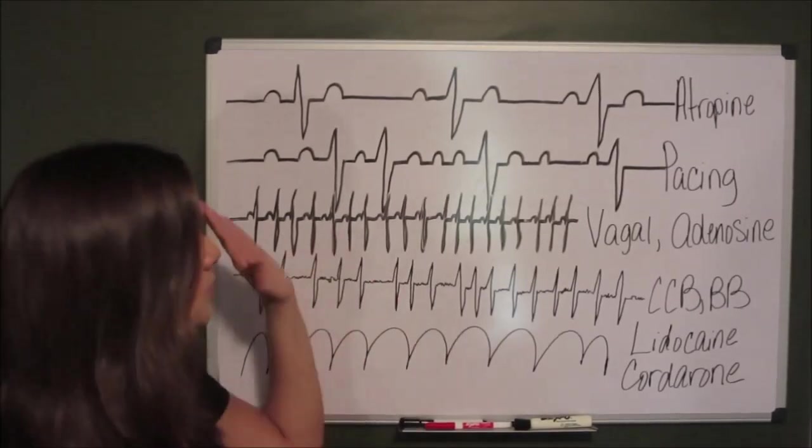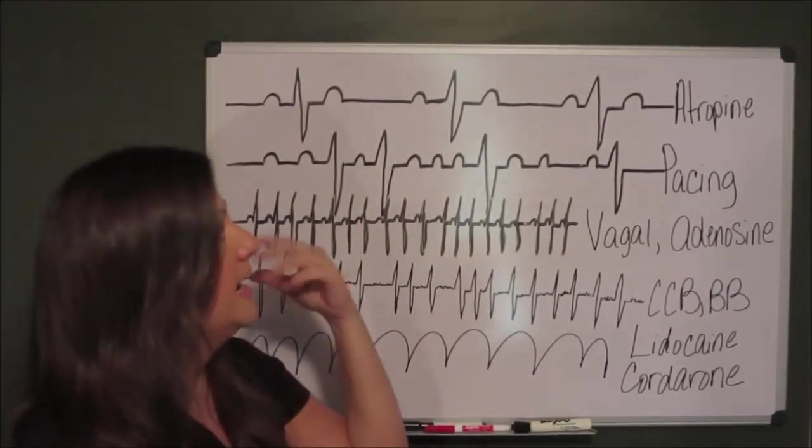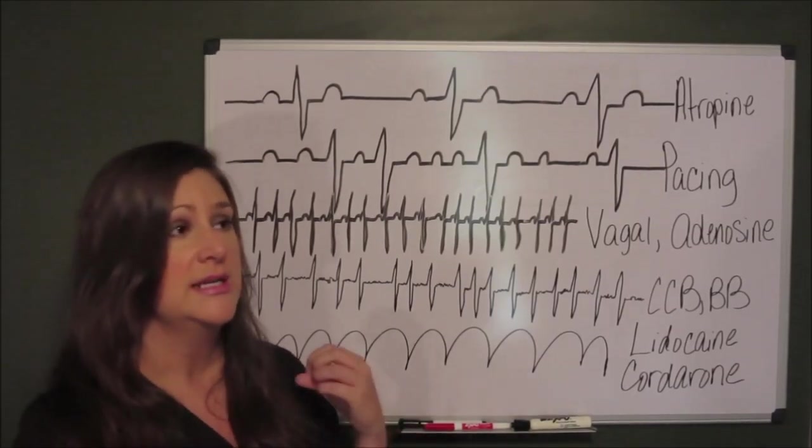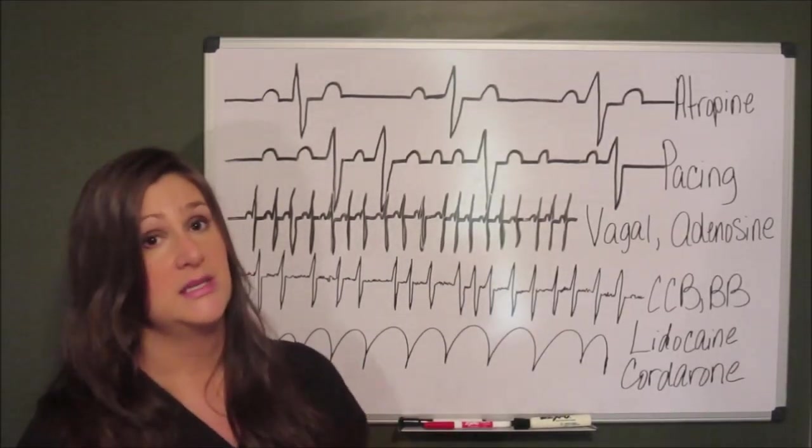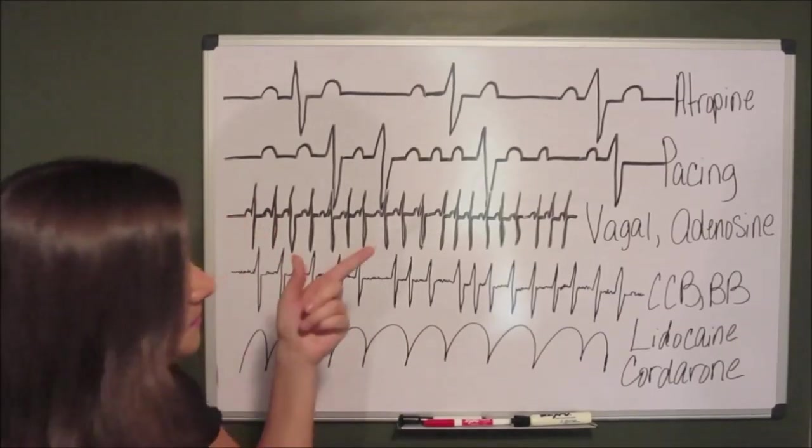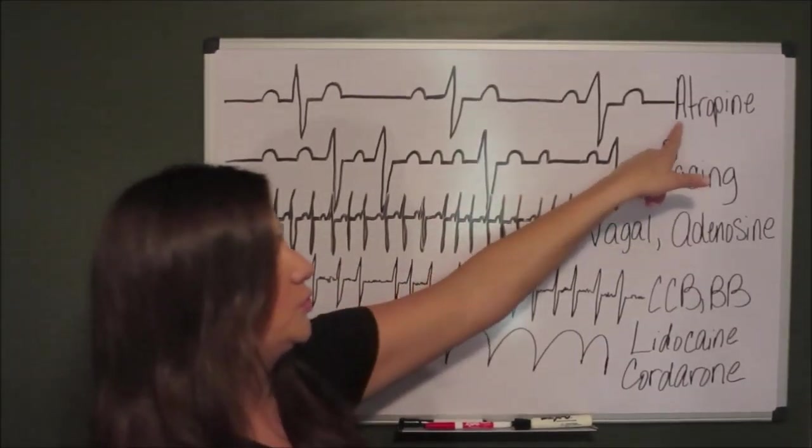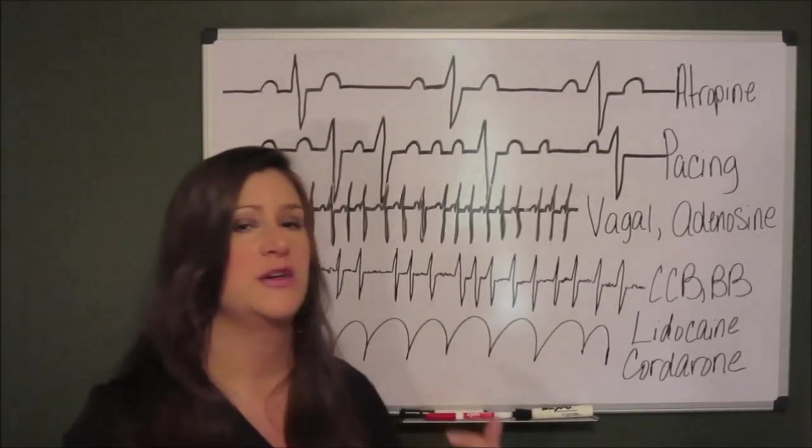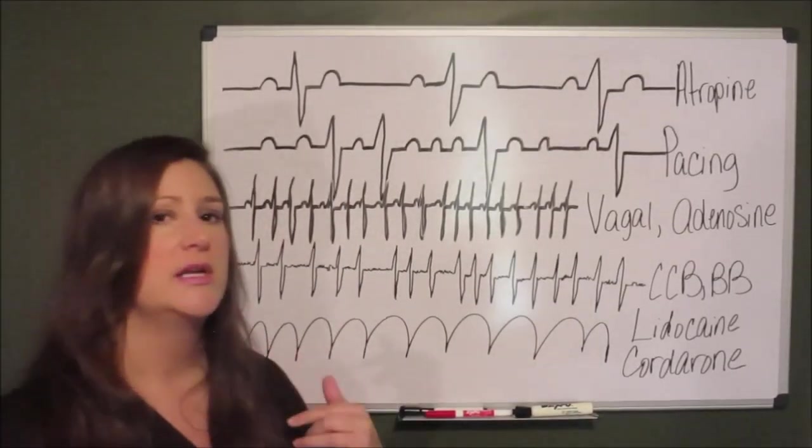If your patient's rhythm is really slow, they have a mental status change or their blood pressure drops, it is then officially symptomatic bradycardia. The way we treat that is with Atropine. We do 0.5 mg of Atropine to treat symptomatic bradycardia.